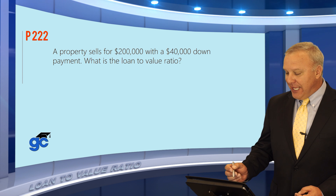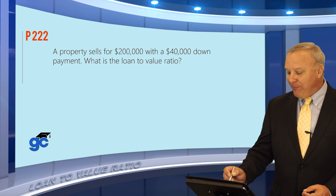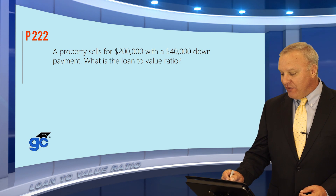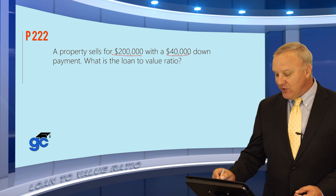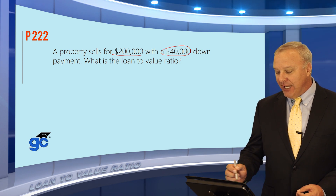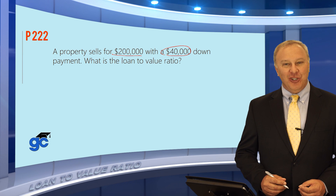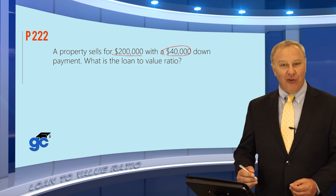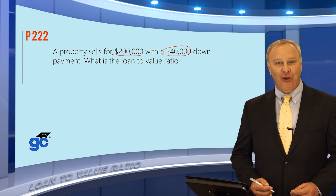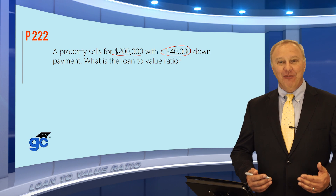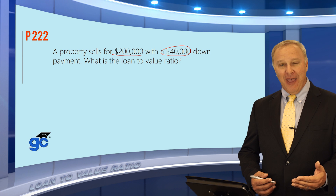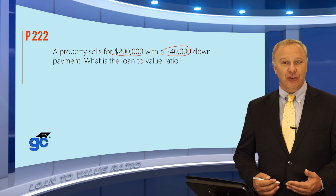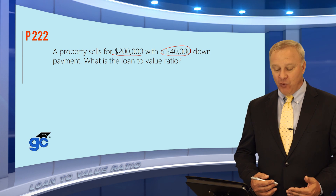Let's take a look at this question. It says that the property sells for $200,000 with a $40,000 down payment, and the question asks you what is the loan-to-value ratio. The problem is that you need to know the loan amount in order to figure out this ratio.